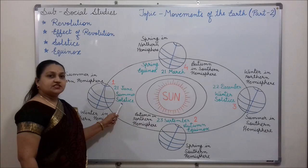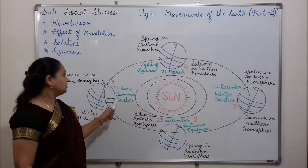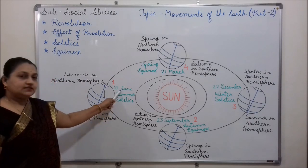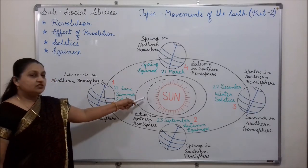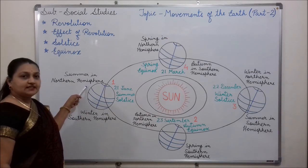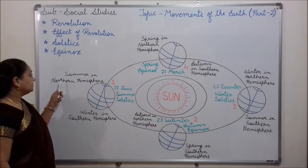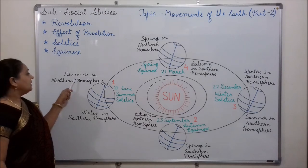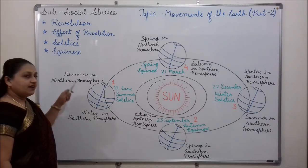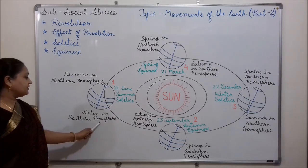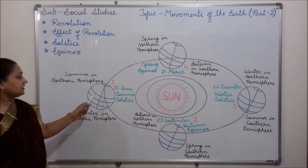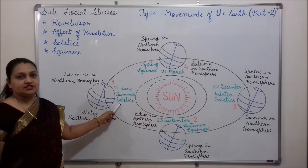Summer solstice falls on 21st June. On this day, the sun shines vertically on the Tropic of Cancer and the northern hemisphere experiences summer season, whereas the southern hemisphere experiences winter season. This is known as summer solstice.